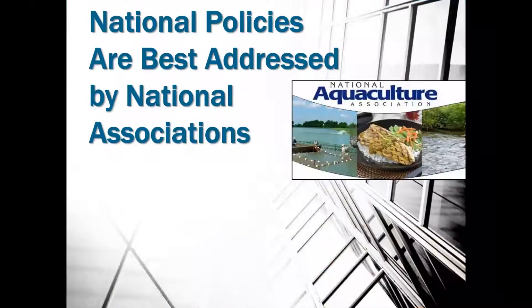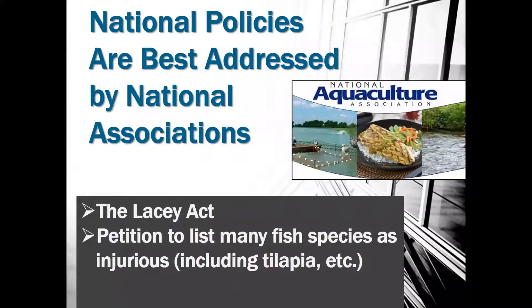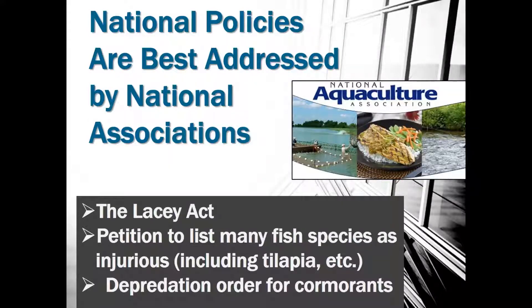There are quite a lot of different types of associations. We have national associations like the National Aquaculture Association that address national issues — many national policy issues are best addressed at that level. The NAA has a long list of priorities including the Lacey Act, a recent petition to list many fish species as injurious — including tilapia — which would make it illegal to transport live tilapia across interstate lines. There's also a depredation order for cormorants and many other issues that NAA is working on at the national level.